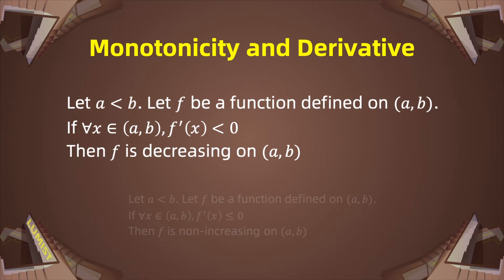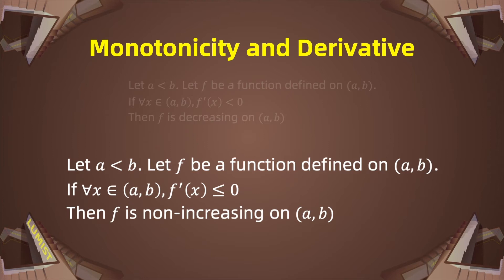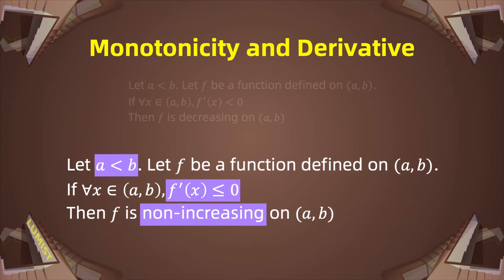If for all x in (a, b) the derivative f'(x) is less than 0, then f is decreasing on (a, b). And if f'(x) is less than or equal to 0, then f is non-increasing on (a, b). This theorem can help us analyze the monotonicity of a function.